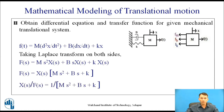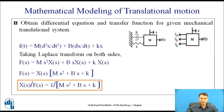To find the transfer function, X(s) / F(s) — where X(s) is the output and F(s) is the input — equals 1 / (ms² + bs + k). This is the transfer function of the given translational system.